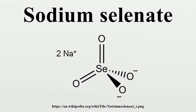Sodium selenate is produced by oxidation of selenium, first with nitric acid, producing selenious acid. The selenious acid is neutralized to form sodium selenite. The sodium selenite is then oxidized in a basic medium with hydrogen peroxide to form a selenate.